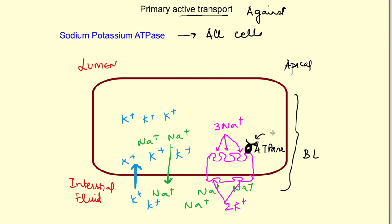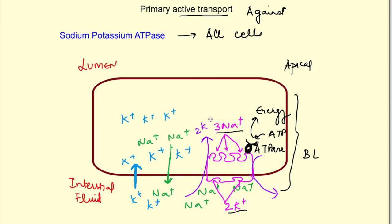When all its binding sites are full — that is, three sodium ions have bound on the inner side and two potassium ions on the outer side — this ATPase cleaves ATP and energy is released. Because of this energy, there is a change in configuration or shape of the transporter such that it releases two potassium ions inside and three sodium ions outside. With utilization of ATP, ions are being transported against their concentration gradient.